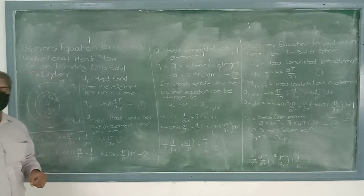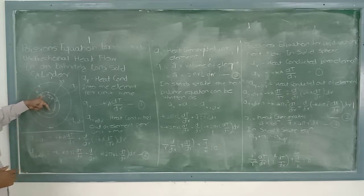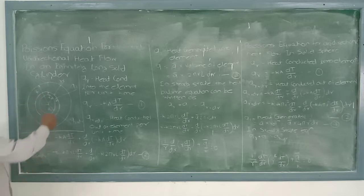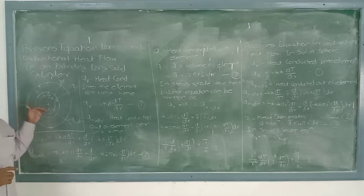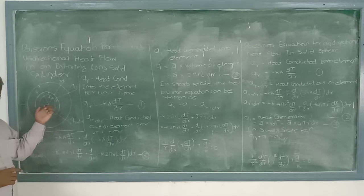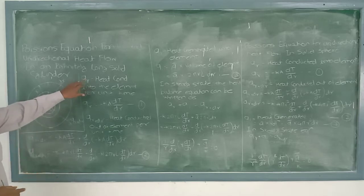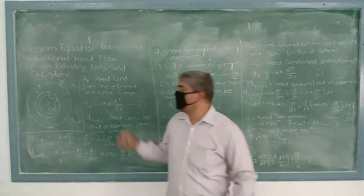This small elemental section generates q1 amount of heat. So the amount of heat supplied qr plus the heat generated q1 is equal to qr plus dr. Whatever heat we are supplying is utilized to generate some amount of heat inside this element, and the remaining is released into the atmosphere. qr is the heat conducted into the element per unit time.